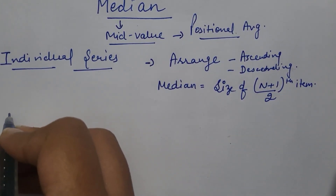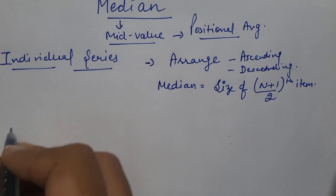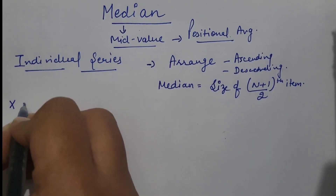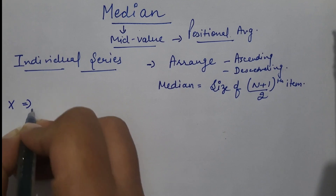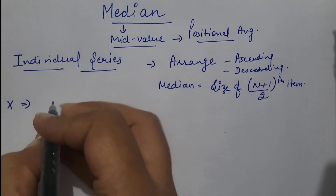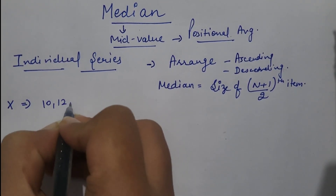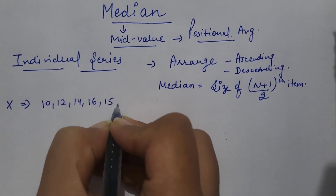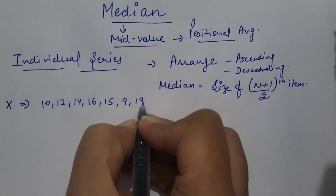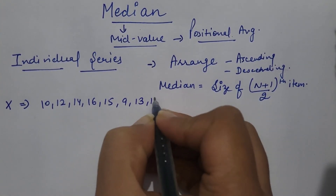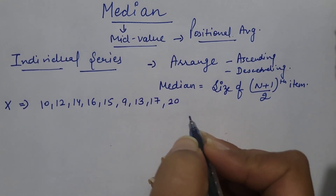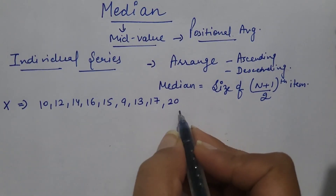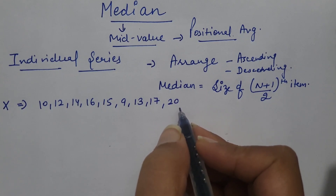With the help of an example, explaining this topic — suppose I am having observations: 10, 12, 14, 16, 15, 9, 13, 17, and 20. These are 9 observations given in the statement.